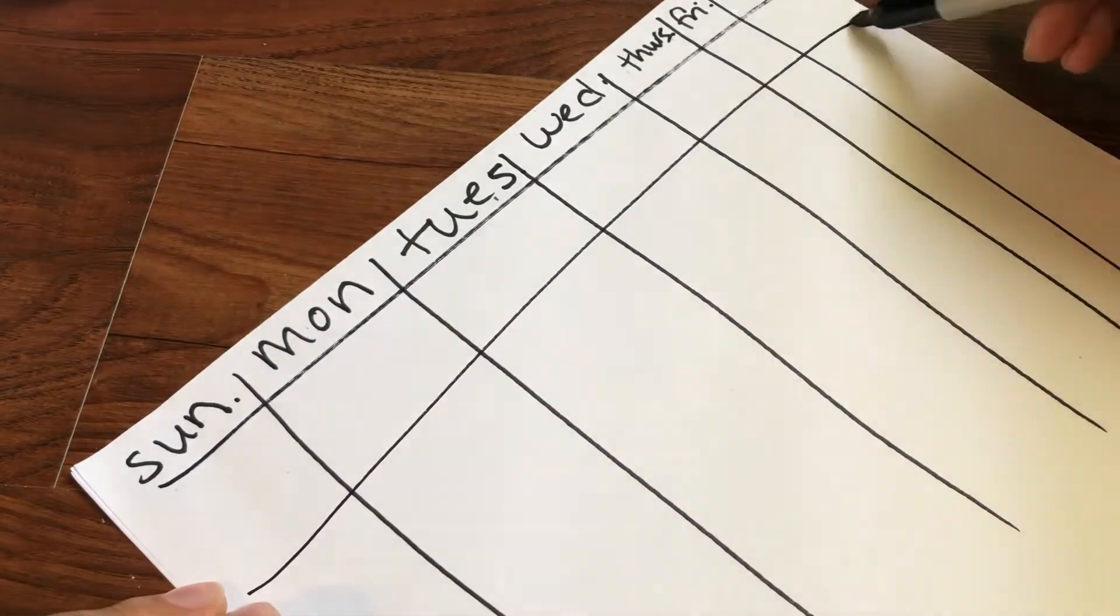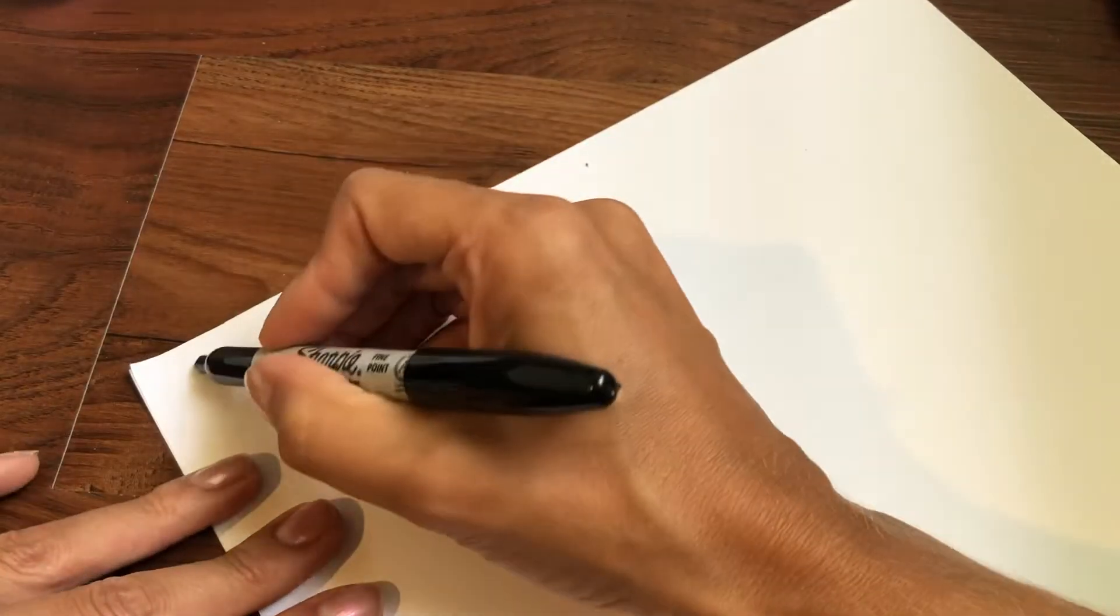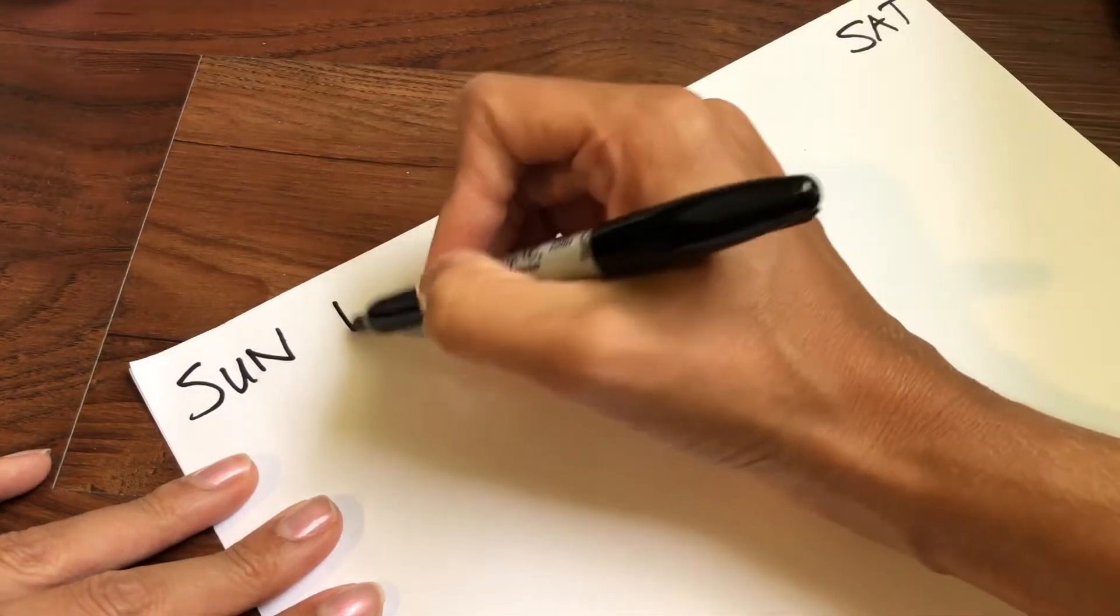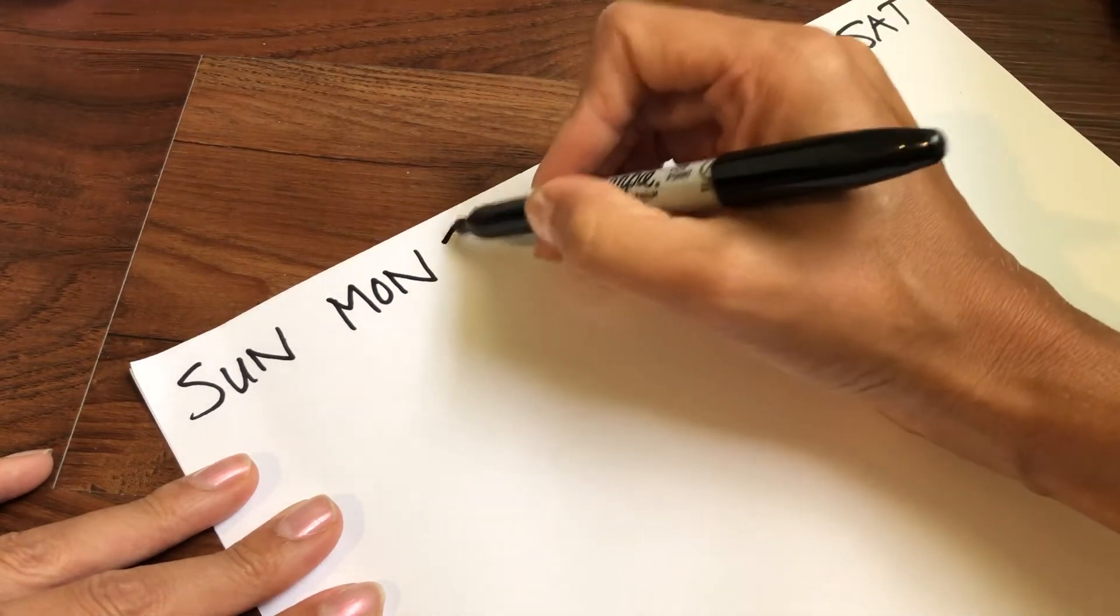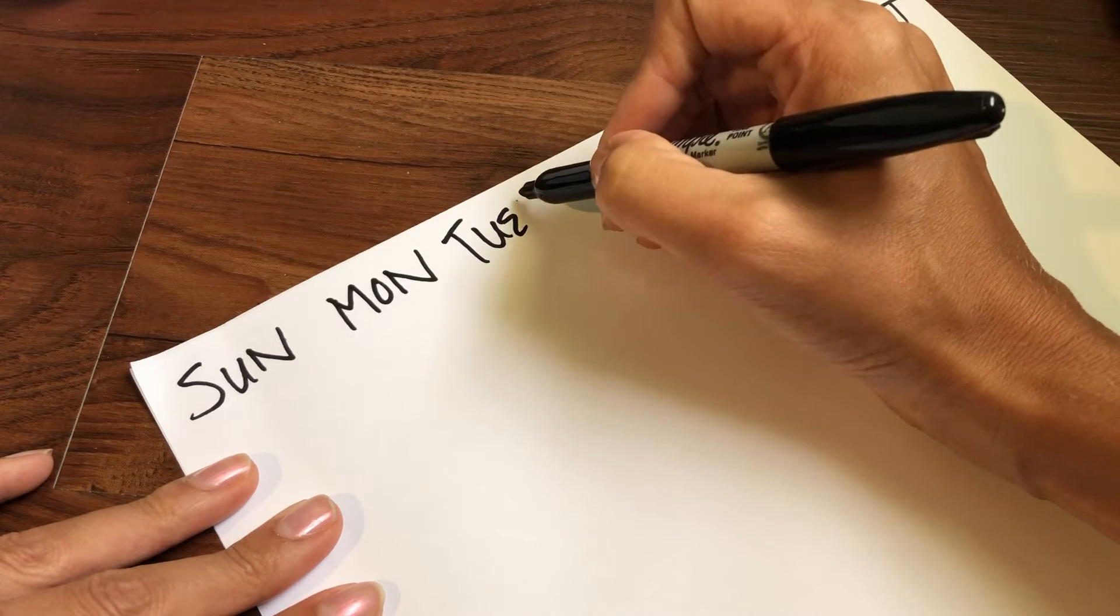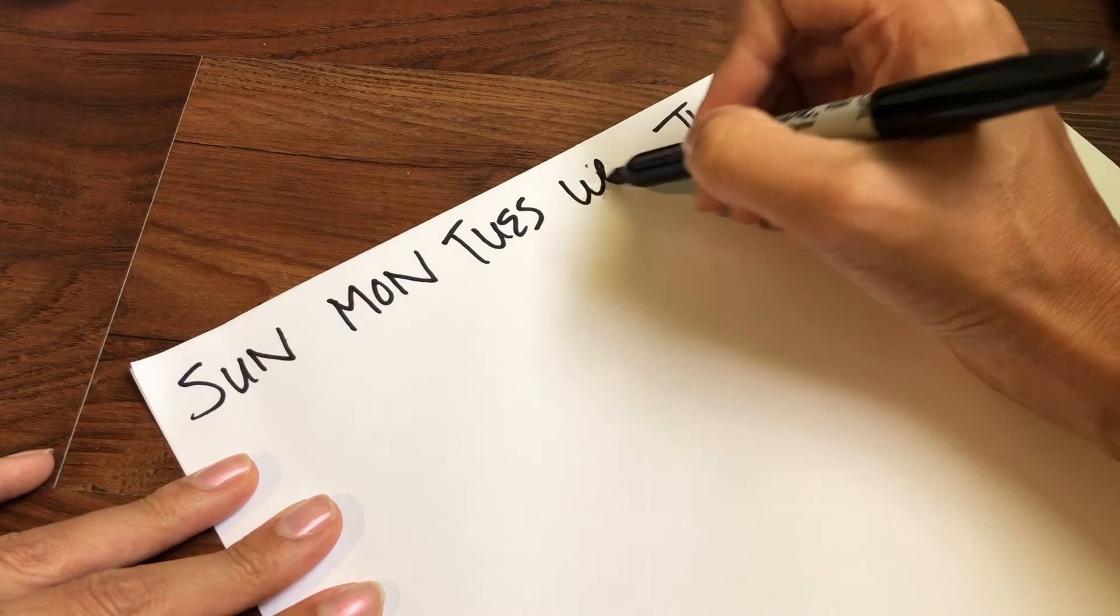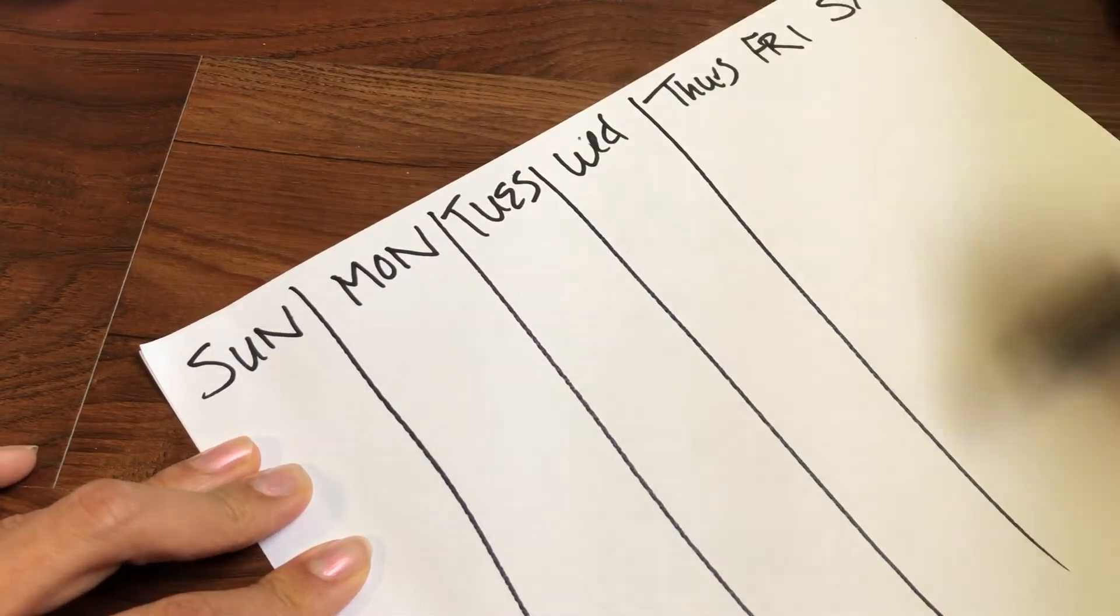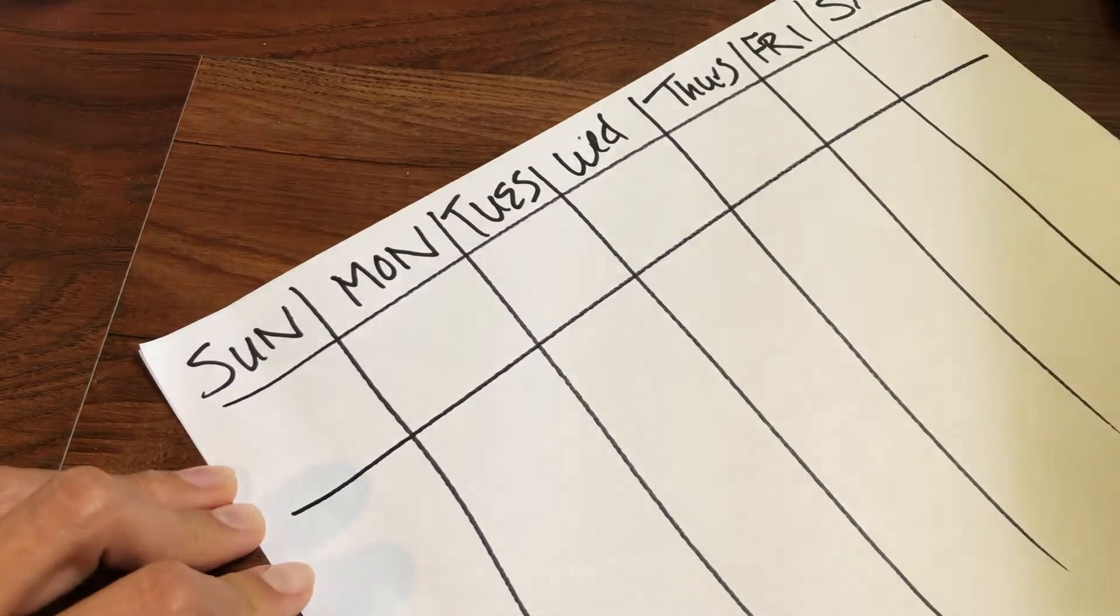So I found a way to make it even. Are you ready? You do Sunday, Saturday, Monday, Friday, Tuesday, Thursday, Wednesday. And check that out, they are equal for the most part. How cool is that?